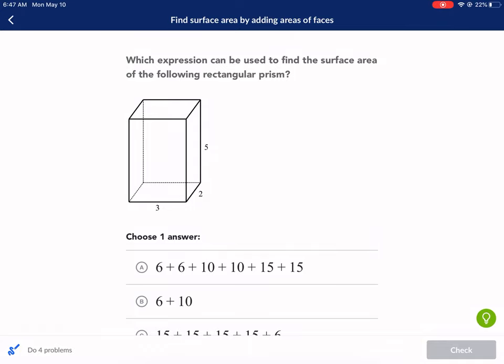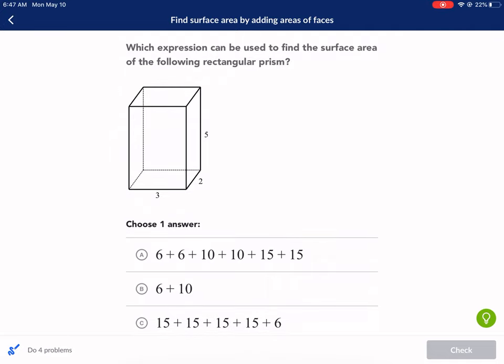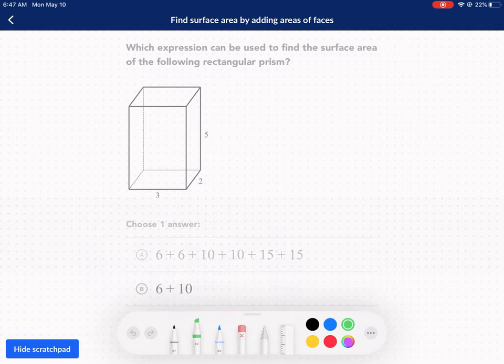Hi everyone, this is Mr. West. We are doing a Khan Academy tutorial today on finding the surface area by adding area of faces. That's by definition how you find surface area—adding all the different surfaces, which are the sum of the different sides of the 3D shape.